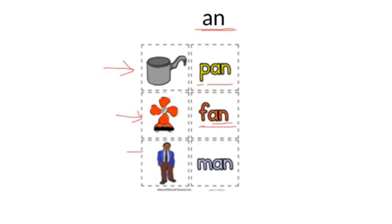And the last picture: man. Look at the word man: M, AN — man. So we have pan, fan, man. All these words have the sound AN at the end.